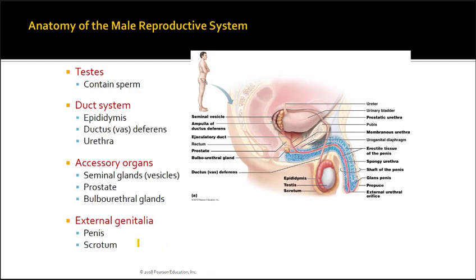On this slide we begin by reviewing the anatomy of the male reproductive system. We have the testes, which contain sperm, and a duct system where sperm and the fluid it resides in will travel. We have the epididymis, the ductus or vas deferens, and then the urethra.